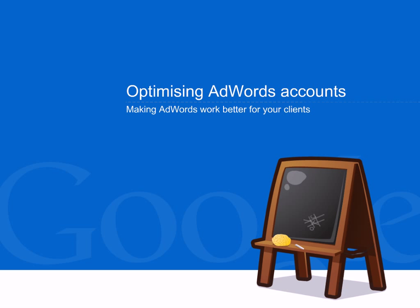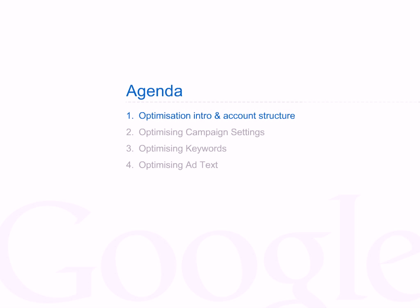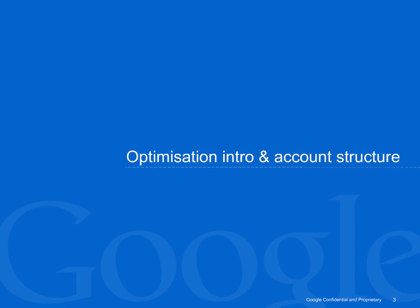Welcome to this AdWords online classroom tutorial on optimization. We aim to give you the necessary knowledge and skills to make changes to your clients' campaigns that will improve their effectiveness and ROI. First we'll introduce our recommended approach to optimization and discuss optimal account structure. Then we detail some campaign settings optimization techniques, before thinking about what makes a good keyword list. Finally, we'll look at getting the most out of your text ads. So let's get started.